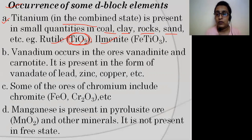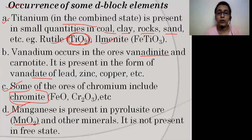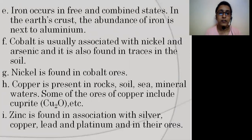Manganese is present in the ore pyrolusite (MnO2), and you never find manganese in free state. Next is iron — iron can be found in free as well as in combined state. You may have studied the composition of the Earth's interior — 'NiFe' — where Ni is for nickel and Fe is for iron, meaning iron is found in the Earth.